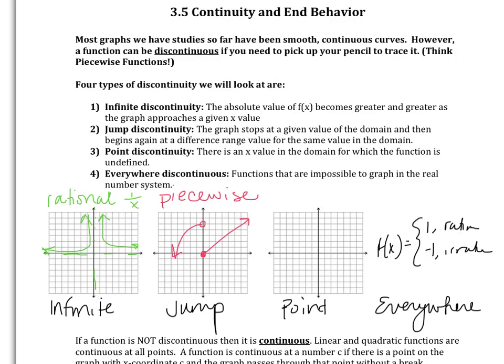And then we have point discontinuity where there is an x value in the domain for which the function is undefined. So that often looks like any type of continuous function where there is a gap. So there's just maybe one point on that line where that function is not defined. And then everywhere discontinuous is functions that are impossible to graph on the real number system. So if you have f of x is 1 when x is rational and negative 1 when x is irrational, we can't graph irrational numbers on a real number system. So that is everywhere discontinuous.